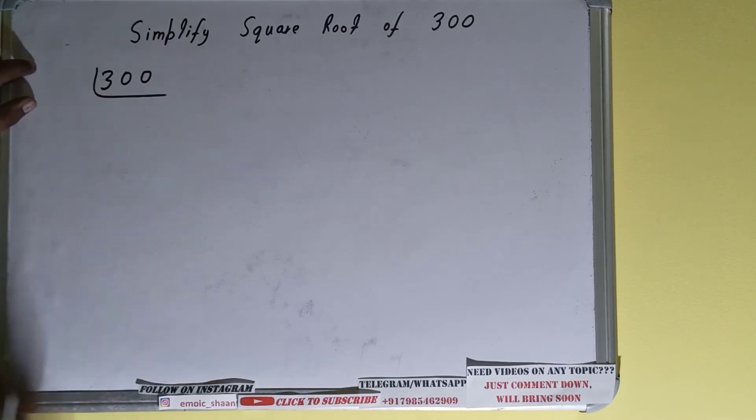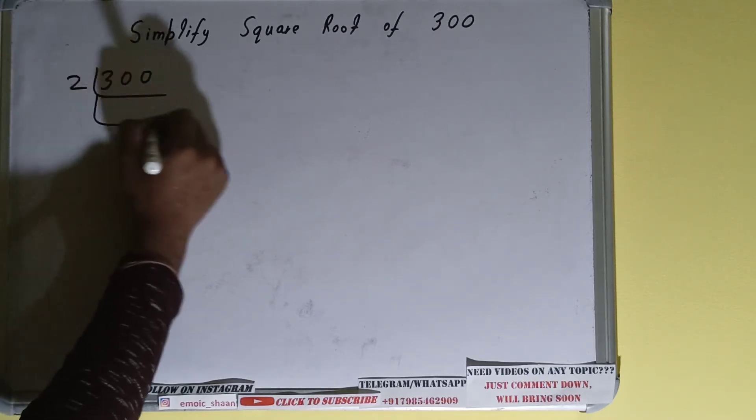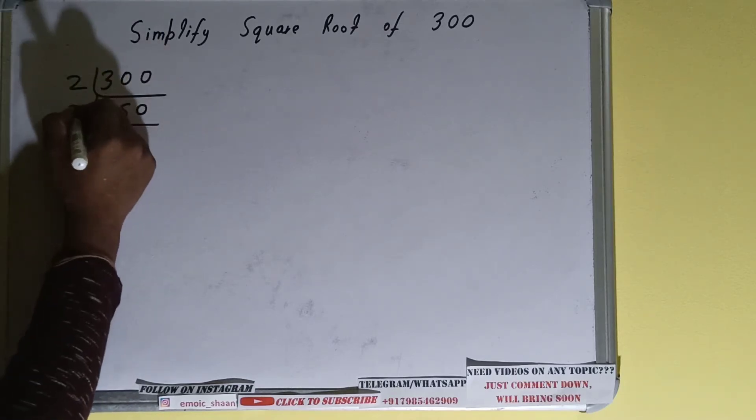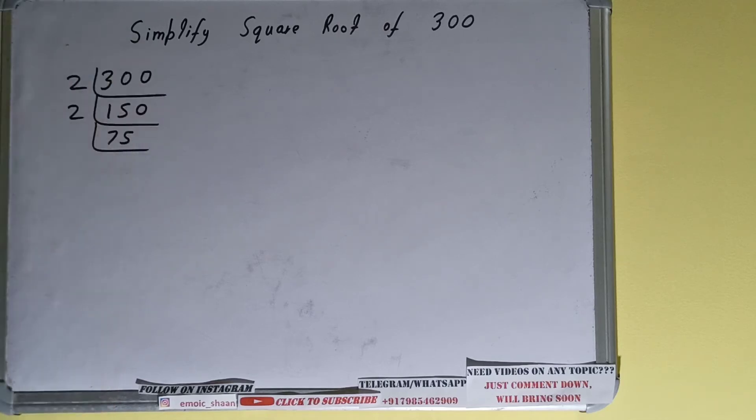We'll start with the lowest prime number that is 2. Is the number 300 divisible by 2? Yes it is, we'll be having 150. Is 150 divisible by 2? Yes it is, and we'll be having 75.